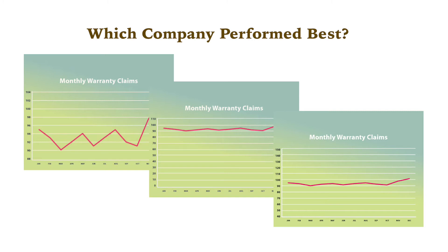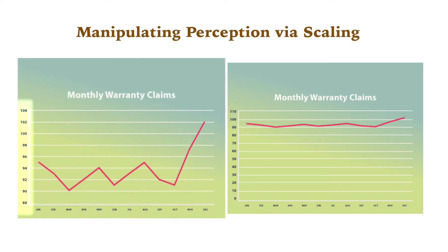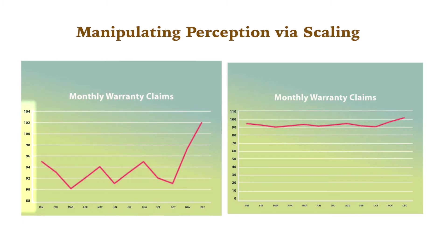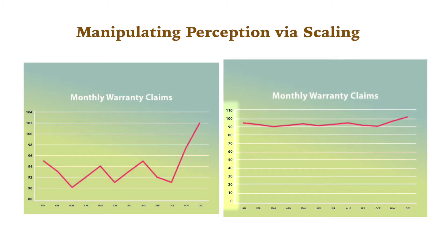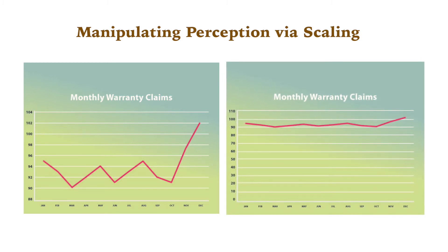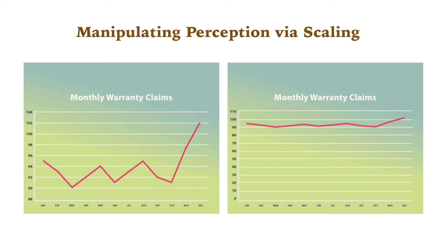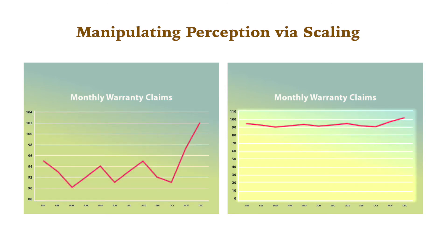It was a trick question — it's the same company and the exact same data in all three graphs. The only differences are the choices made when the graphs were created. On the left, the vertical axis is scaled from 88 to 104, which zooms in on the data and emphasizes the monthly variance. In contrast, the graph on the right is scaled from 0 to 110, which has the opposite effect. Readers might conclude the company on the left is wildly erratic, while the company on the right performs consistently but poorly. Is one presentation more accurate or more truthful than the other?